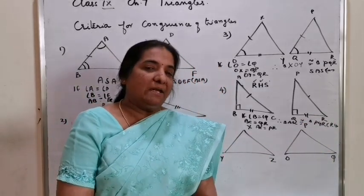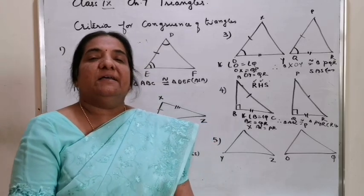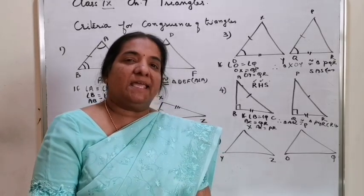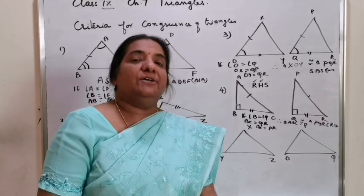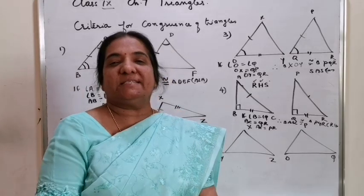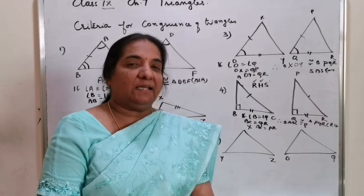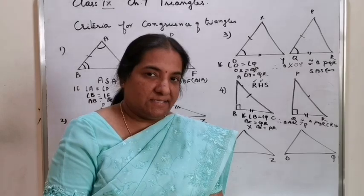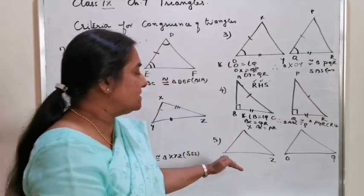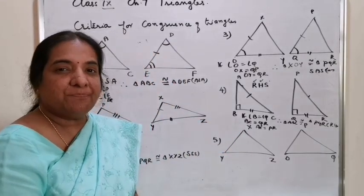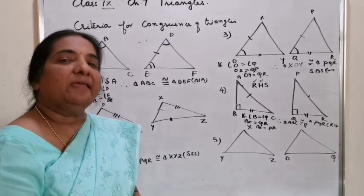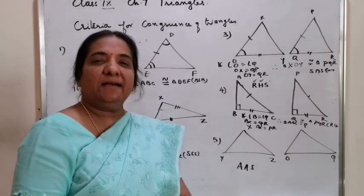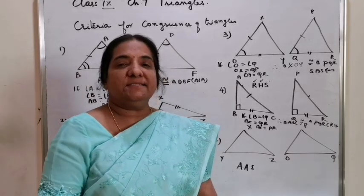So the four main congruencies are SAS, SSS, ASA, and RHS, and using these criteria you were constructing triangles in your smaller classes. Now the last criteria is AAS, which shows any two angles and any one side — it need not be the included side.